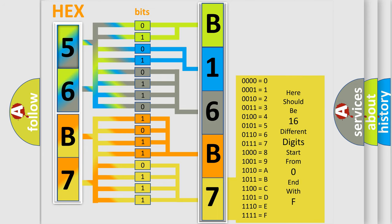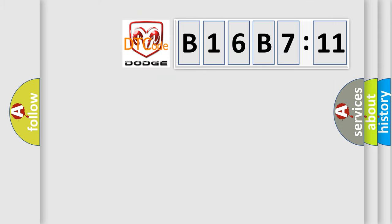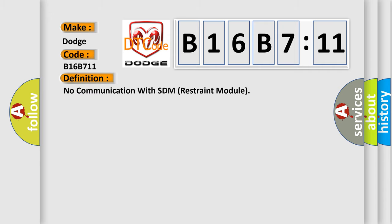We now know in what way the diagnostic tool translates the received information into a more comprehensible format. The number itself does not make sense to us if we cannot assign information about what it actually expresses. So, what does the diagnostic trouble code B16B711 interpret specifically for Dodge car manufacturers? The basic definition is No communication with SDM restraint module. And now this is a short description of this DTC code.